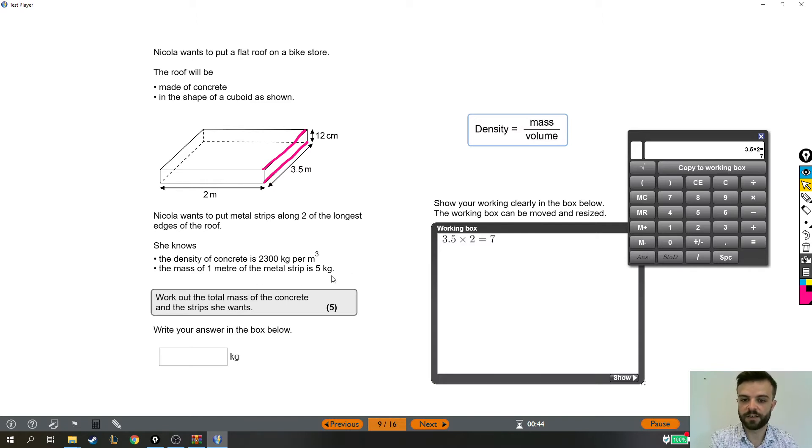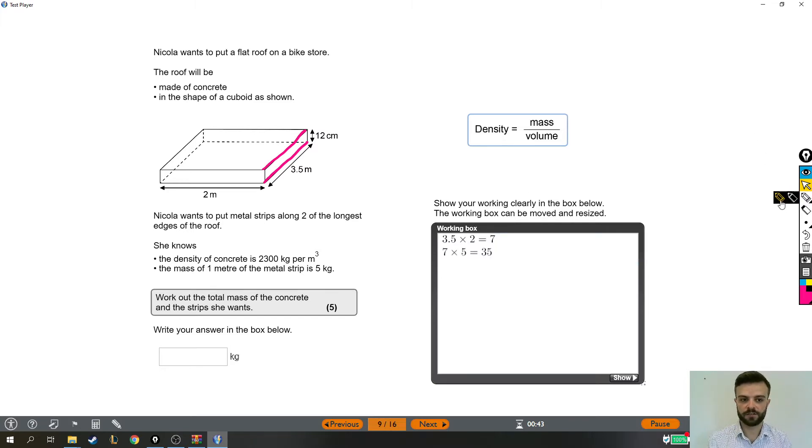And we know that one meter is five kilograms. So seven meters is seven lots of five kilograms. So the metal strip is going to be 35 kilograms. So that is the strip weight.